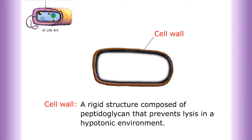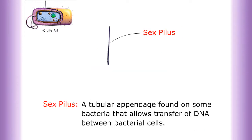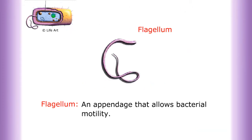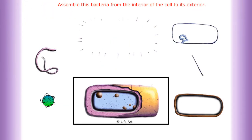Cell wall is a rigid structure composed of peptidoglycan that prevents lysis in a hypotonic environment. Sex pili are a tubular appendage found on some bacteria that allows transfer of DNA between bacterial cells. Fimbriae are short hair-like appendages that can cover the surface of bacteria and allow the organism to adhere to surfaces. Flagellum is an appendage that allows bacterial motility.